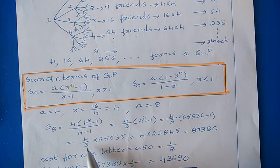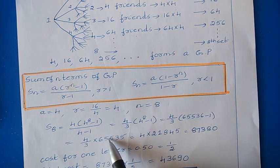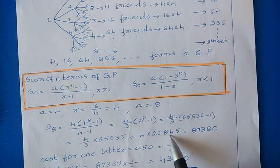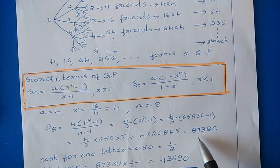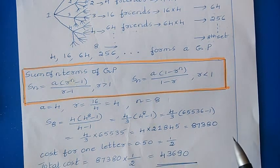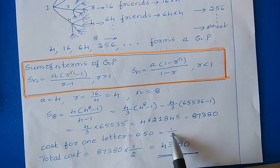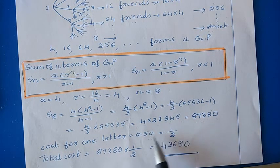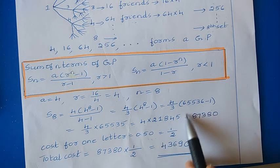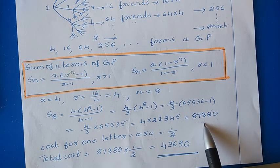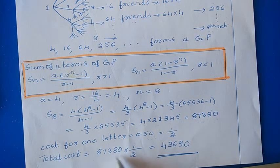Simplifying: (4 ÷ 3) × 65535. Dividing 65535 by 3 gives 21845, then multiplying by 4 gives 87380. So the total number of letters is 87380. In the question, the cost for one letter is 0.50 paisa, which is the same as one-half. So the total cost = 87380 × (1/2) = 43690.